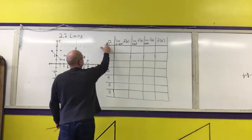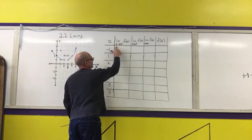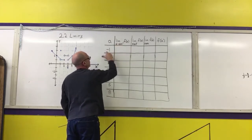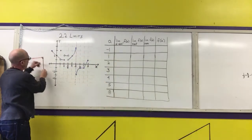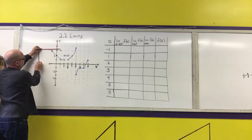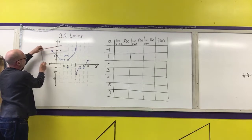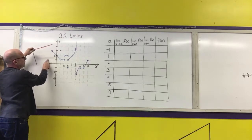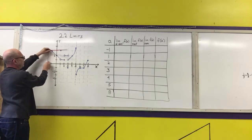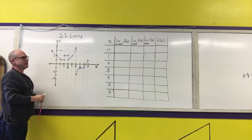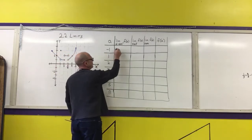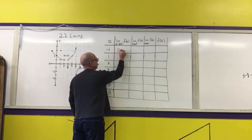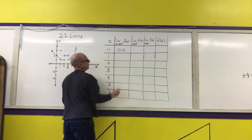For the first example, we want the limit as x approaches -1 from the left of the graph. As x approaches -1 from the left, there is no graph. So there cannot be a limit approaching from the left because we cannot physically approach the graph from that side. In this case, we say that it does not exist, abbreviated DNE.